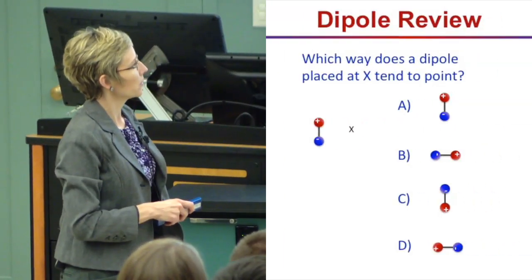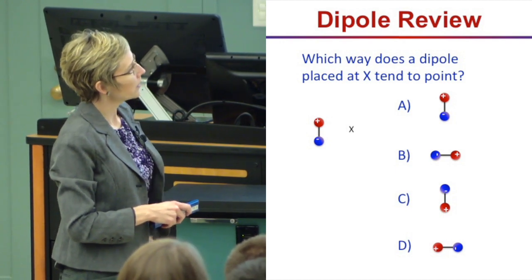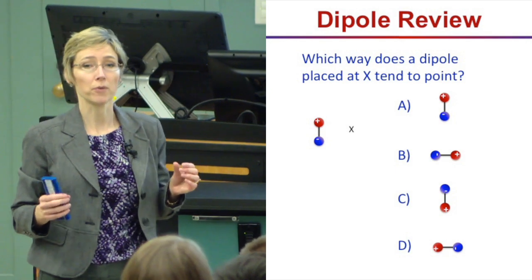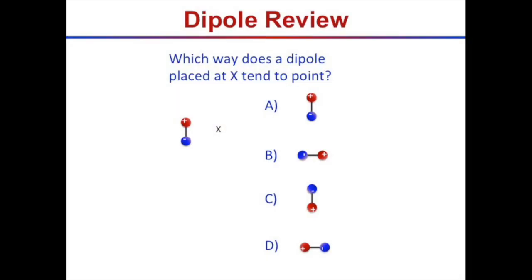I put a dipole here fixed in space, and I want to think about what another dipole at position X would prefer to do — how it would tend to orient itself. Think of a dipole that can rotate and spin around; which orientation does it prefer?